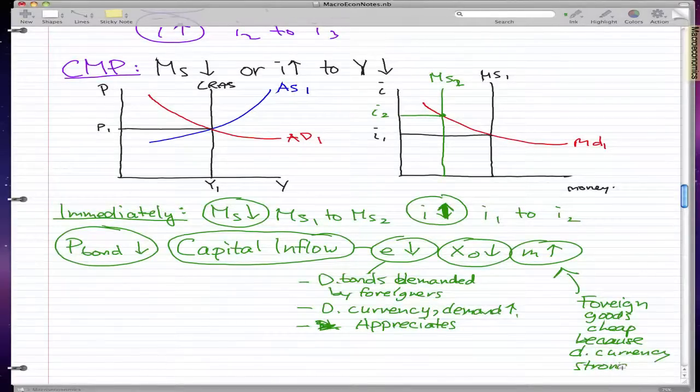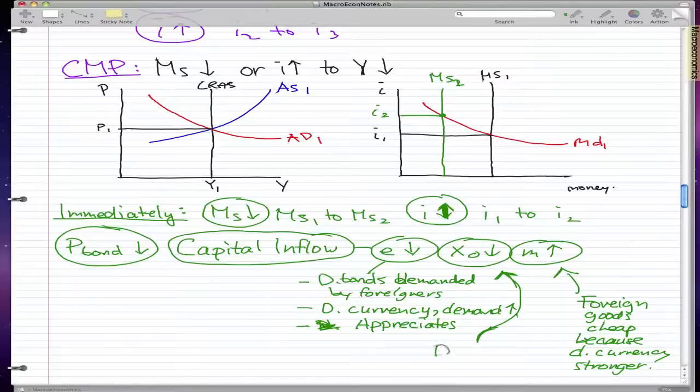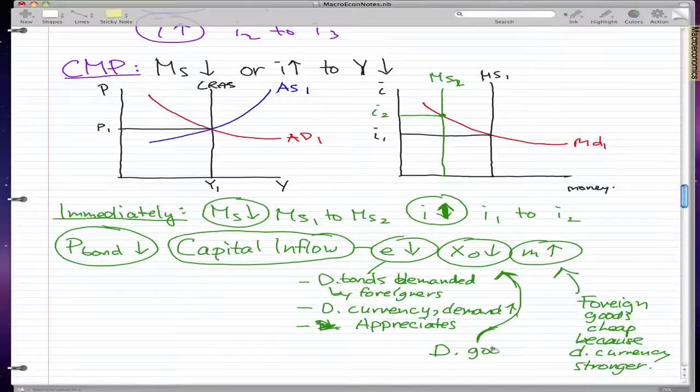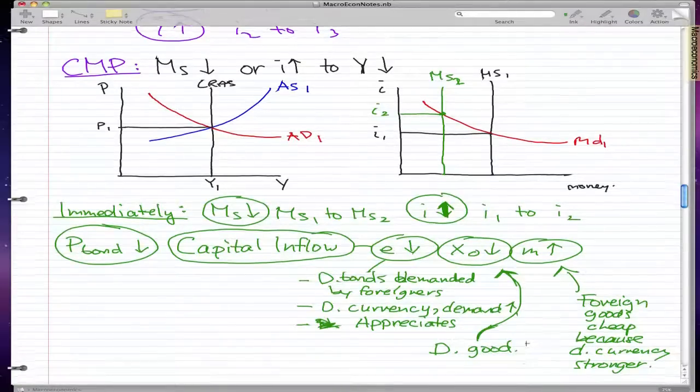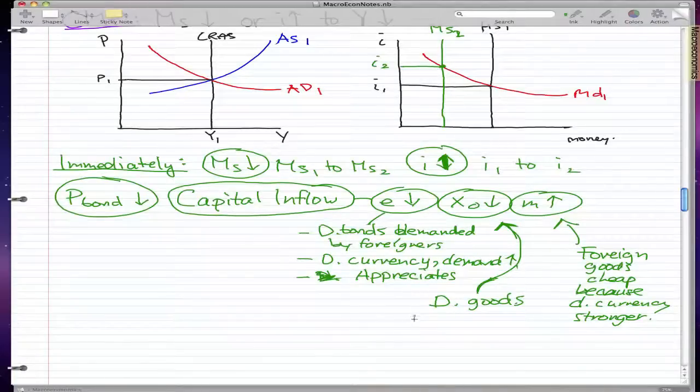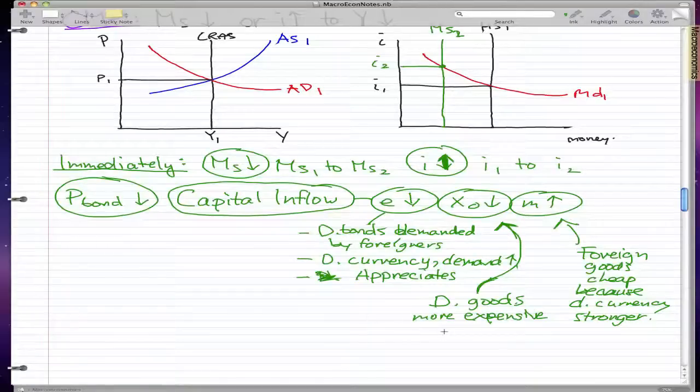I'm sorry for the ugly writing, but I'm just trying to do this really fast. And that is why the exports are actually falling. Because for the foreigners, our products, our domestic goods, which are named D-goods for time-saving, these, our goods are more expensive. Because the money they need, they need a lot of their own money, their foreign money, to get like a dollar of our domestic money.